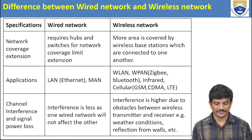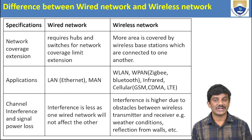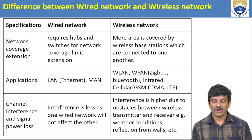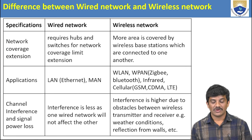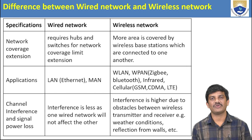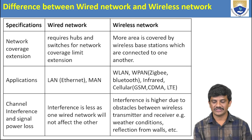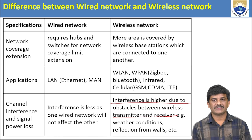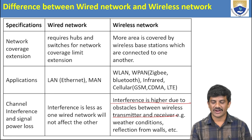Network coverage extension: wired requires hubs and switches with limited extension; wireless covers more area via base stations. Applications: wired uses LAN and MAN; wireless uses wireless LANs, wireless PANs including Zigbee and Bluetooth, infrared, cellular (GSM, CDMA, LTE). Channel interference: wired has less interference; wireless has higher interference due to obstacles between transmitter and receiver — such as weather conditions, reflection from walls, buildings, and hills.